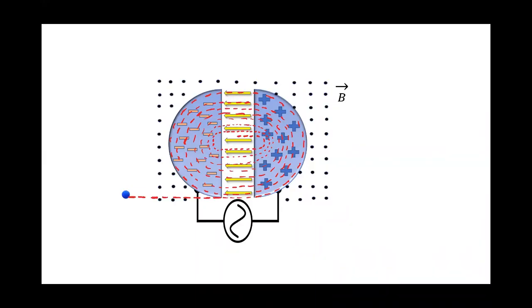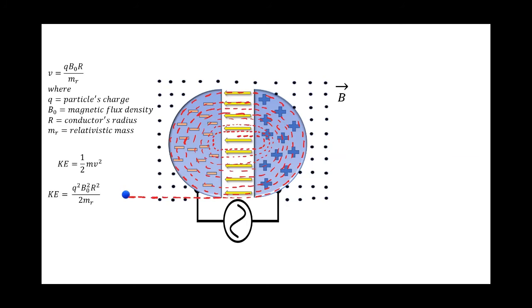After covering the whole spiral path, the particle will be ejected to its targeted material. The output velocity is given by the following formula, where r is the radius of the conductor. And by using the kinetic energy equation, we can derive a formula for the expected output energy, which is typically in hundreds of mega electron volts.